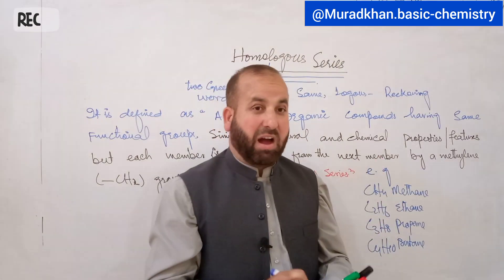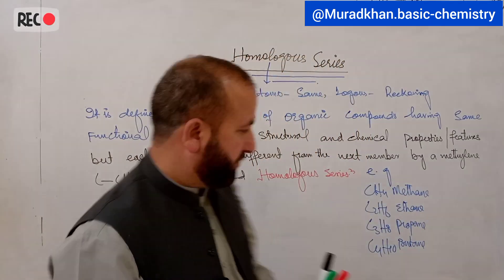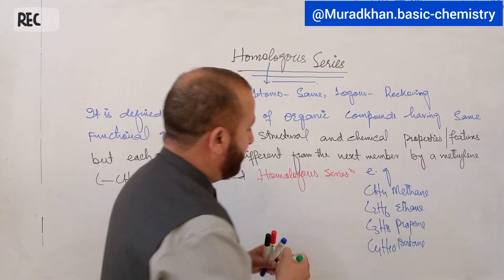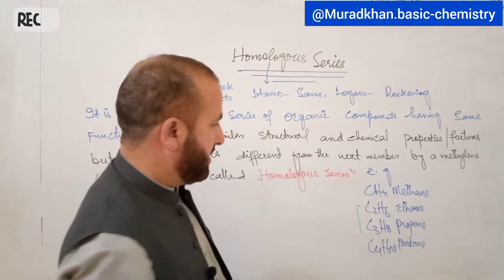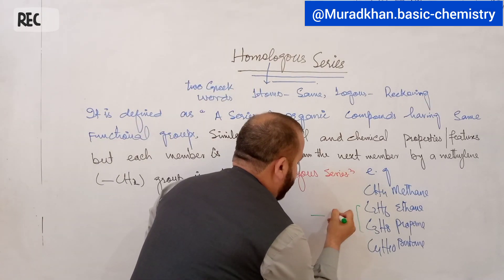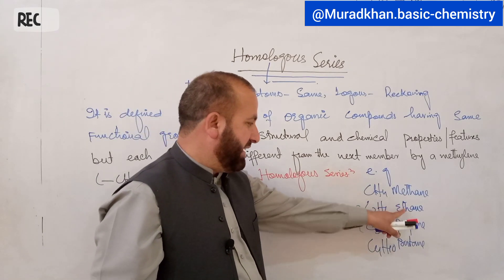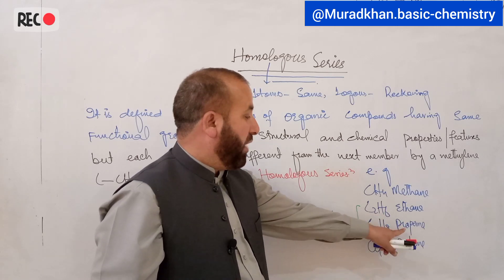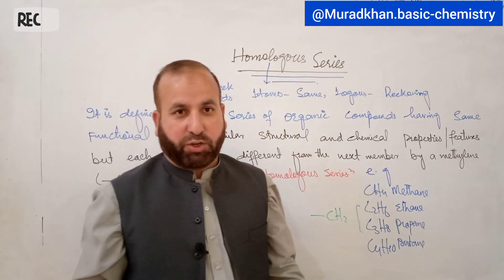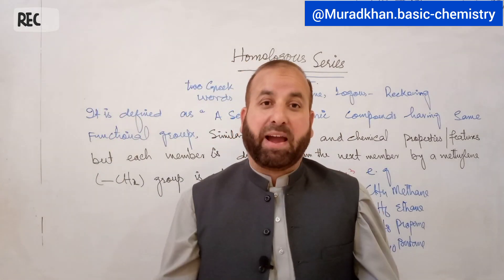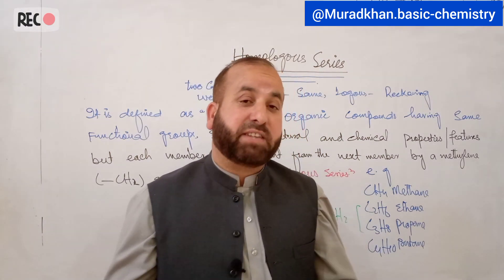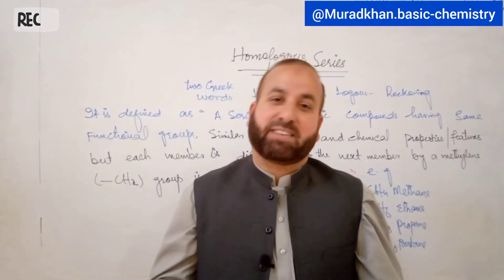If we take a few members of the alkane homologous series and differentiate two adjacent members, there is only a difference of one methylene (CH₂) group. For example, comparing ethane and propane: ethane has 2 carbons and 6 hydrogens, while propane has 3 carbons and 8 hydrogens — a difference of one CH₂ group. This CH₂ group is known as the methylene group. Such a series where adjacent members differ by only a methylene group is known as a homologous series.